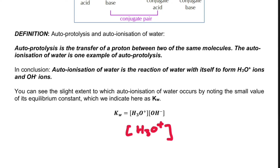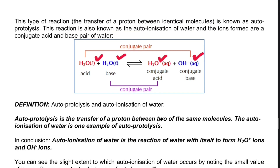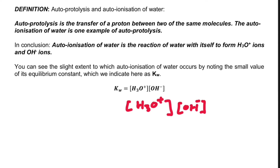Kw equals [H3O⁺] multiplied by [OH⁻]. These are our products. For the reactants we don't include anything because H2O and H2O are in liquid phase — we only consider aqueous solutions and gases. So [H3O⁺] × [OH⁻] = 1×10⁻¹⁴. This is the equilibrium constant for the auto-ionization of water, and it is very consequential — we are going to use this time after time.